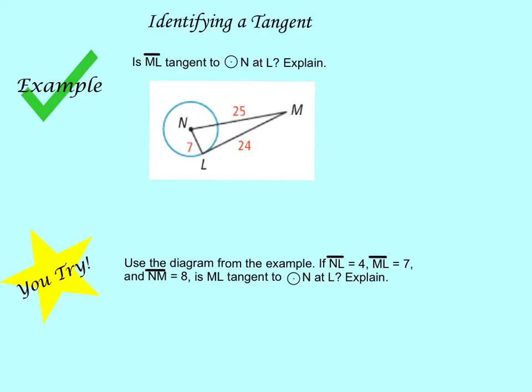Identifying a tangent. So we learned a property that says that a tangent is going to be perpendicular. If it is a tangent, it'll be perpendicular to the radius. So I want to know, is this angle right here actually a right angle? Which means, is this triangle actually a right triangle? Well, I can determine that by trying to use Pythagorean theorem. If Pythagorean theorem works, then I know I have a right triangle. If it doesn't work, I don't.